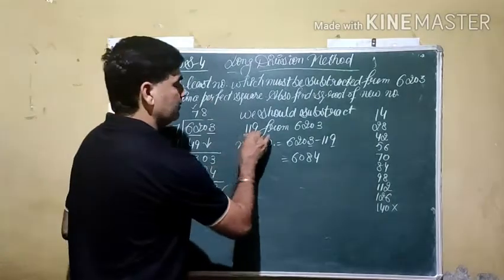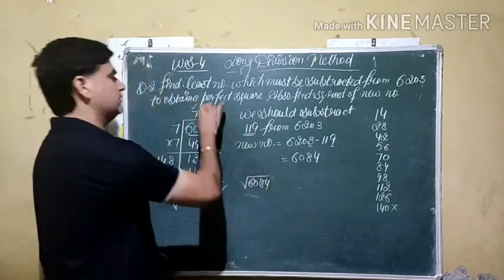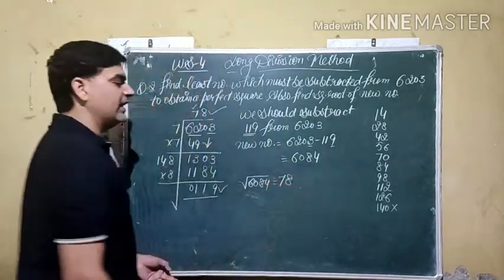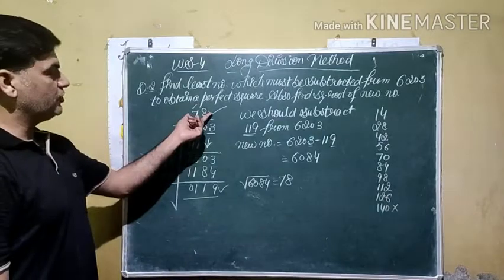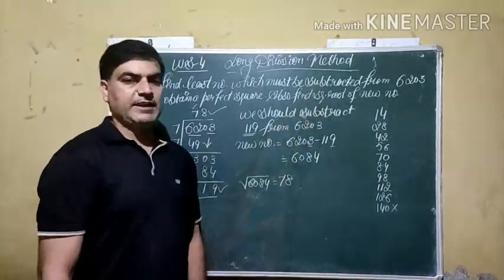119 should be subtracted, and the square root of the new number is given by this value, 78. No need to calculate it again, this quotient value gives us the direct square root of the number in case of subtraction.